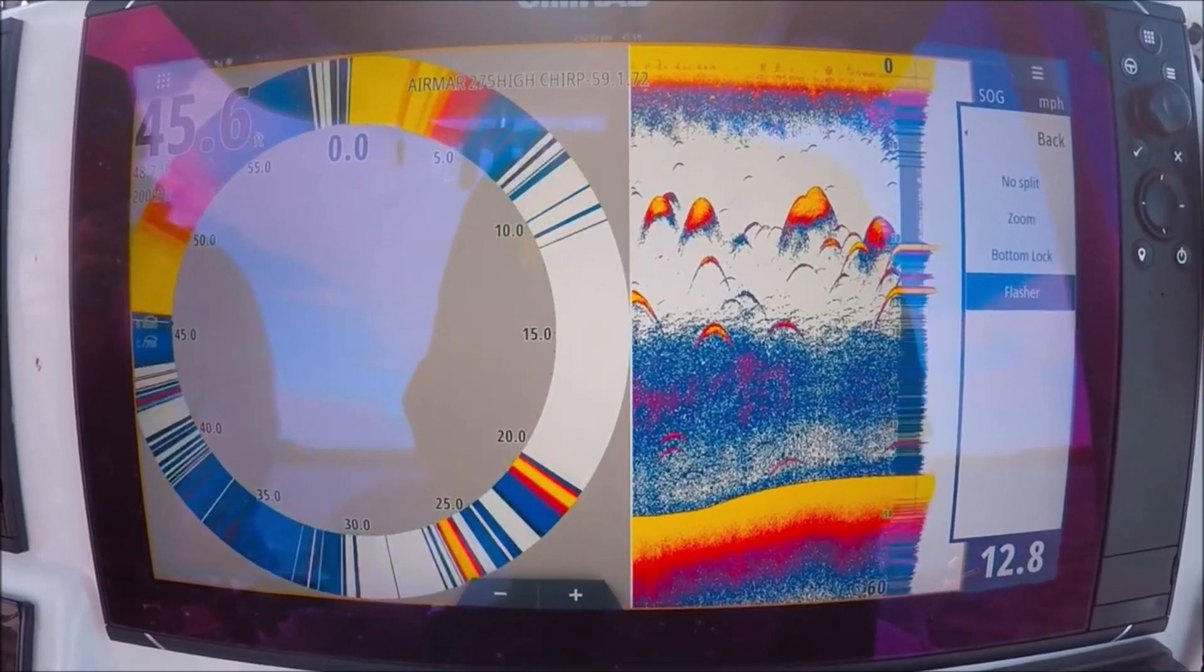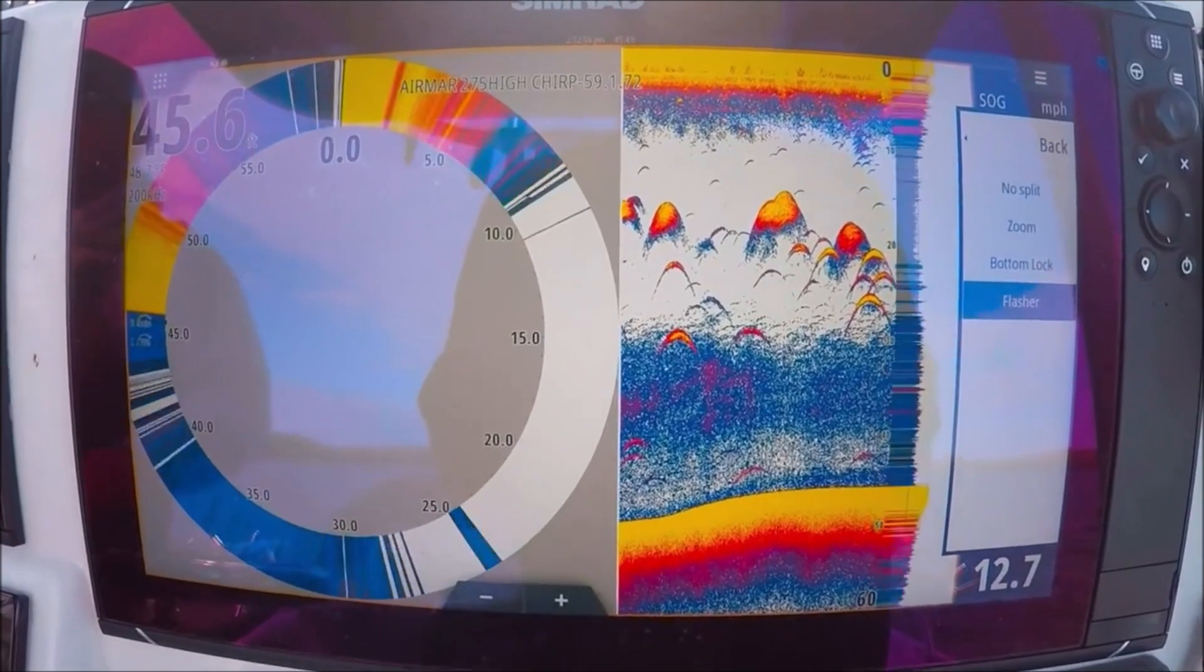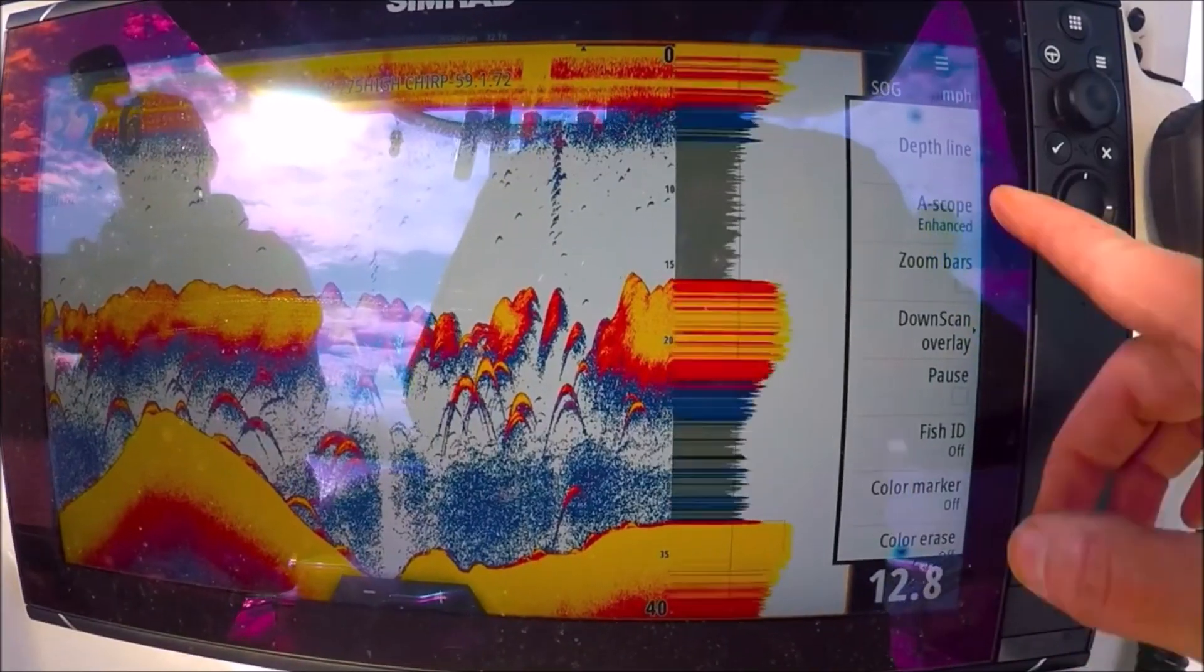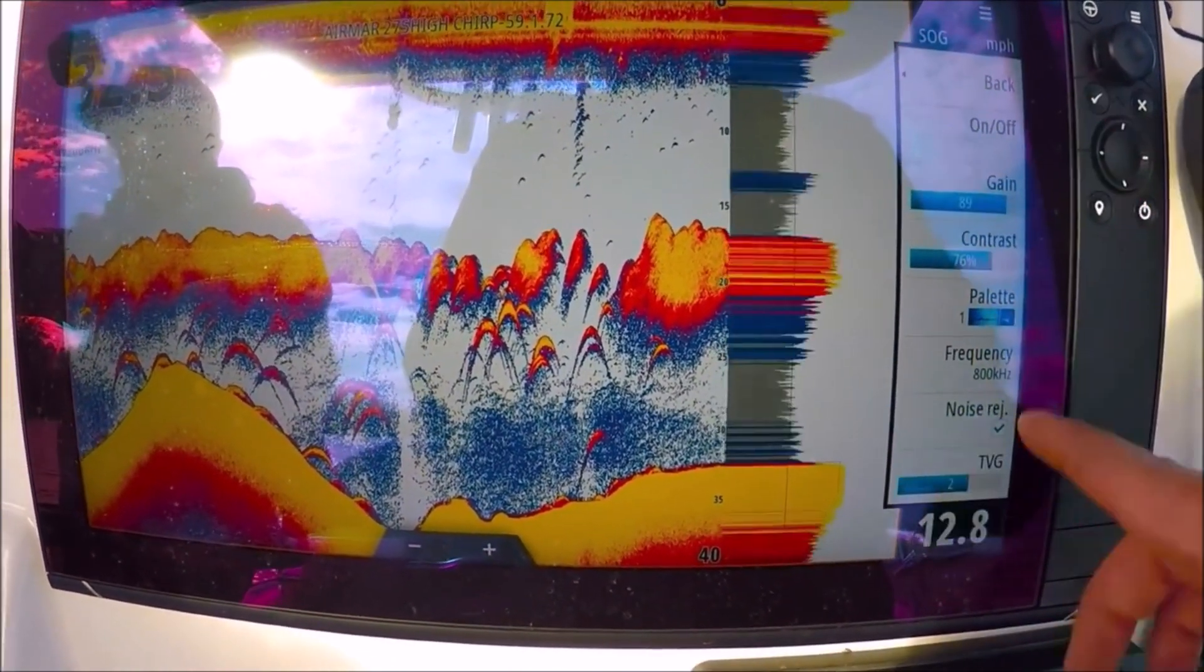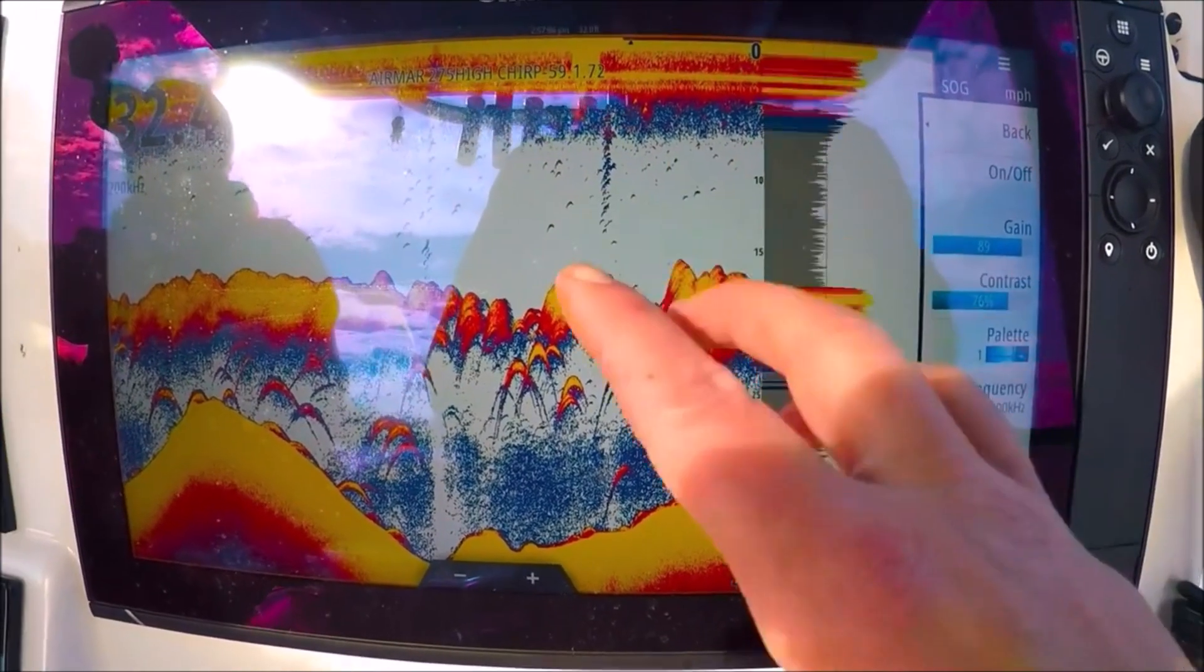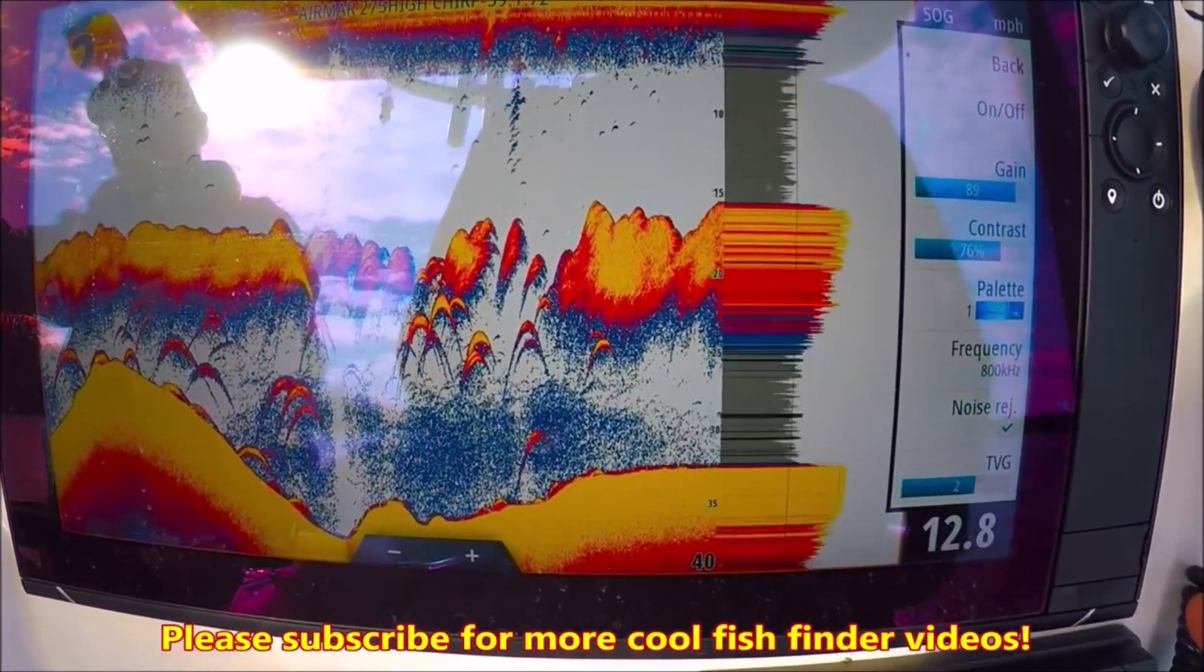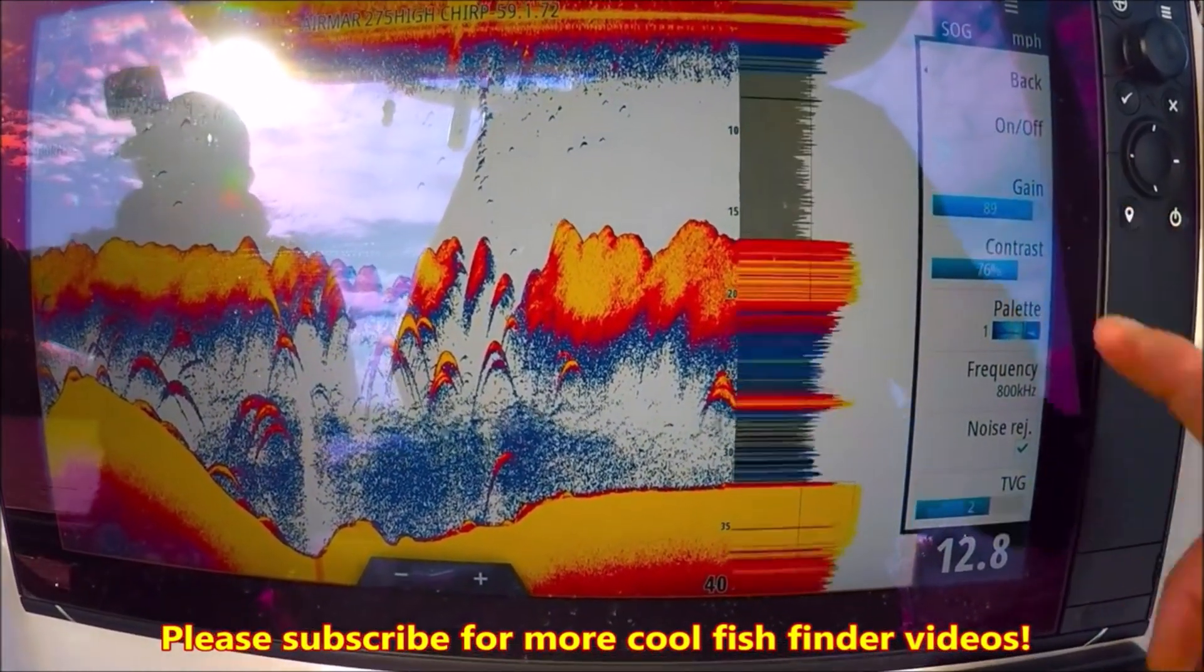It shows you instant returns that are under your transducer right now. Okay, we have our down scan overlay. This will take our down scan sonar and lay it on top of our palette here in our 2D sonar. But to be honest, with the new fish reveal, it kind of takes this feature away, so you can turn it on so you can see.